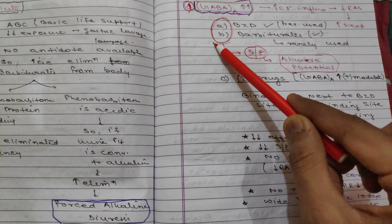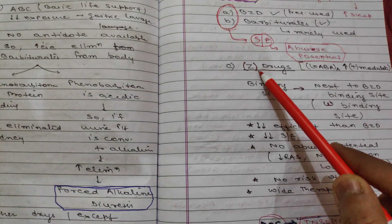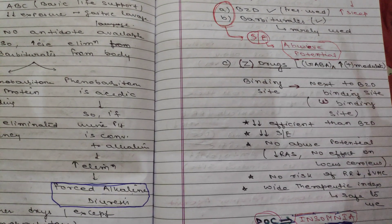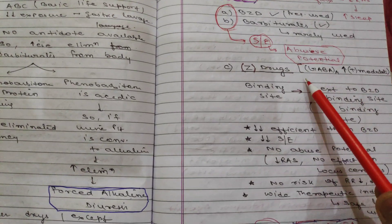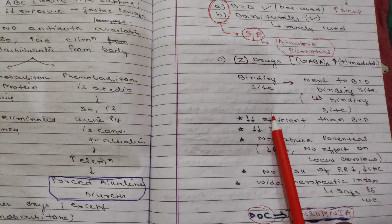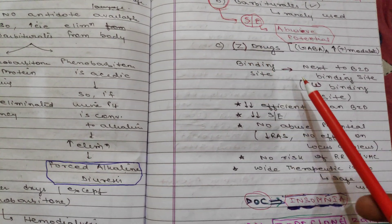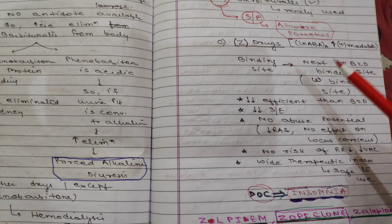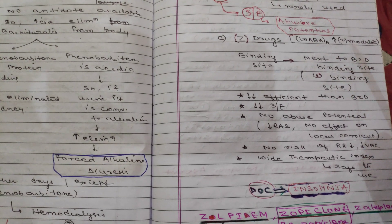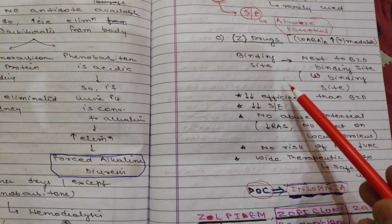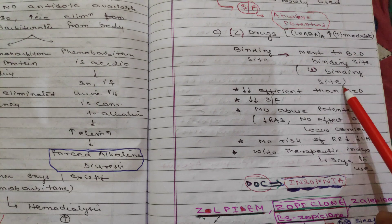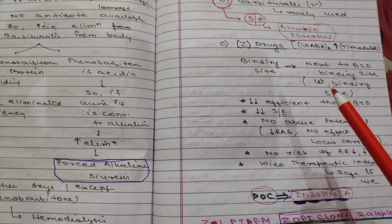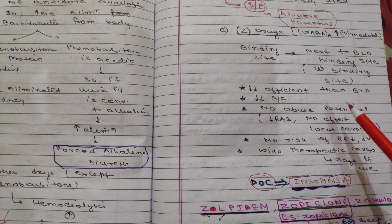In sedatives and hypnotics, the first group is benzodiazepines, the second is barbiturates, and the third group is Z-drugs. Z-drugs are also GABA-A receptor modulators. They bind just next to the benzodiazepine binding site — that is, the omega binding site. They have less efficacy compared to benzodiazepines, less side effects, and importantly, no abuse potential.